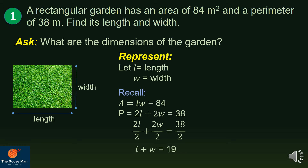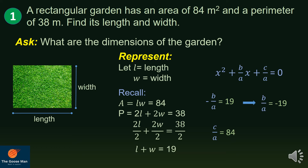We can think of length times width equals 84 and length plus width equals 19 as the equations representing the product and sum of the roots, respectively, of a quadratic equation. Remember that if the sum and product of the roots are given, the roots can be determined using x² + (b/a)x + (c/a) = 0, where negative b/a is the sum and c/a is the product. So negative b/a equals 19, meaning b/a equals negative 19, and c/a equals 84.